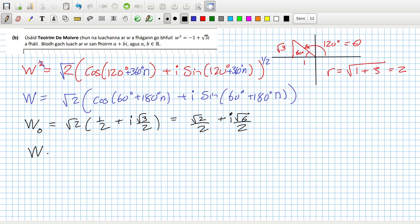And then w sub one, well that's just n is one and it should just be the negative of that answer. Root two times minus a half plus i, and then sine 60 plus 180 is minus root three over two. So that's minus root two over two minus i times root six over two.